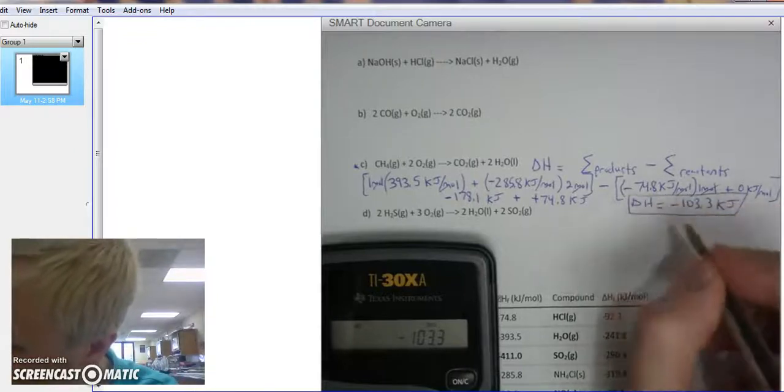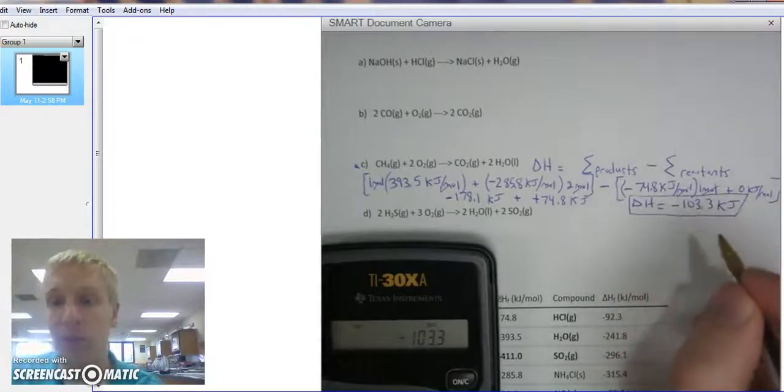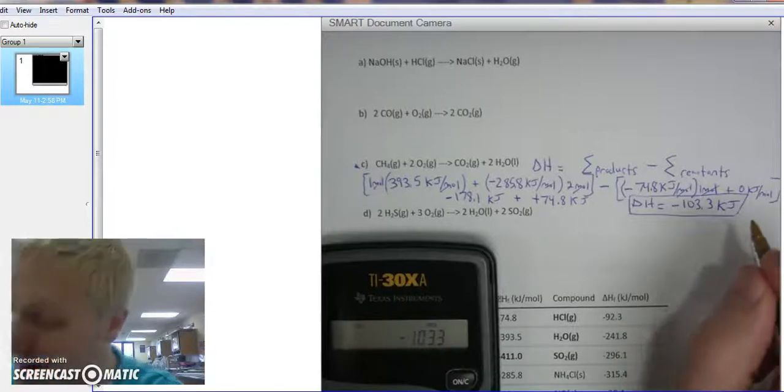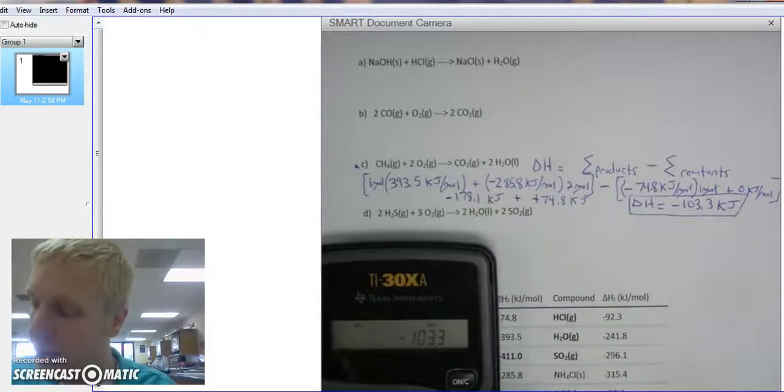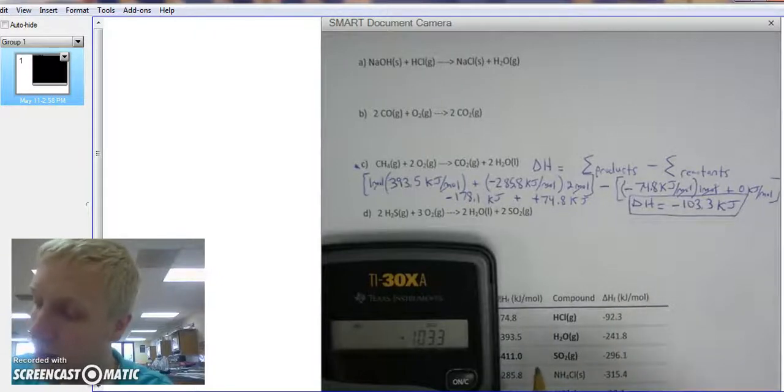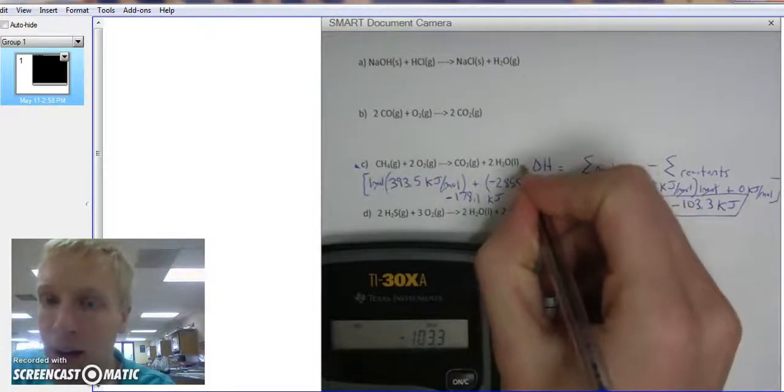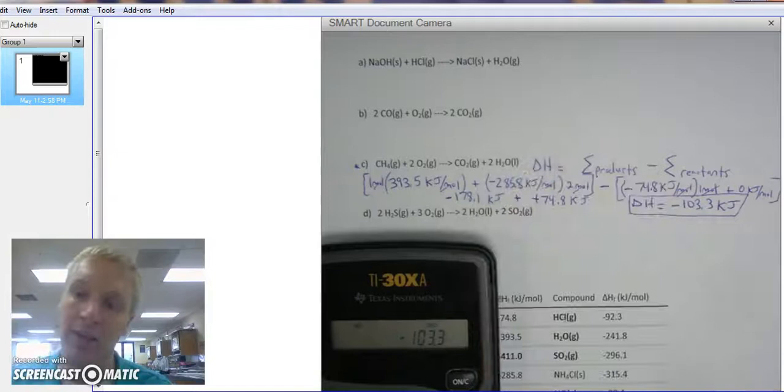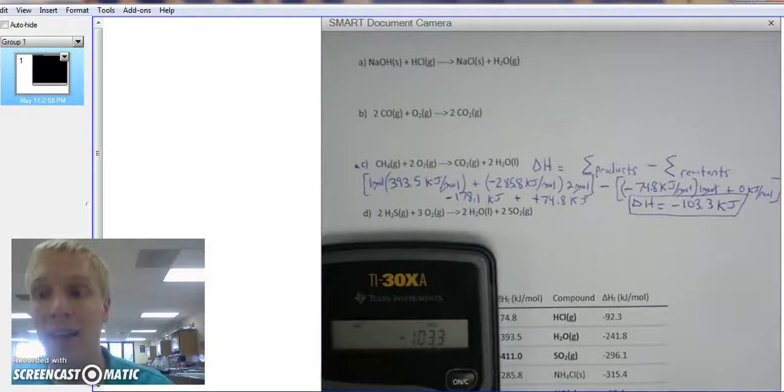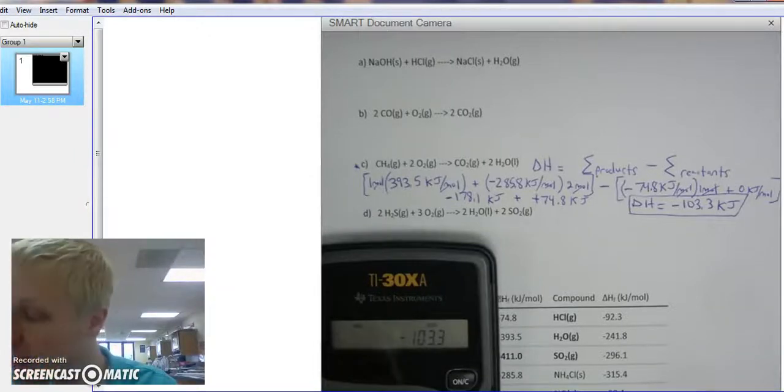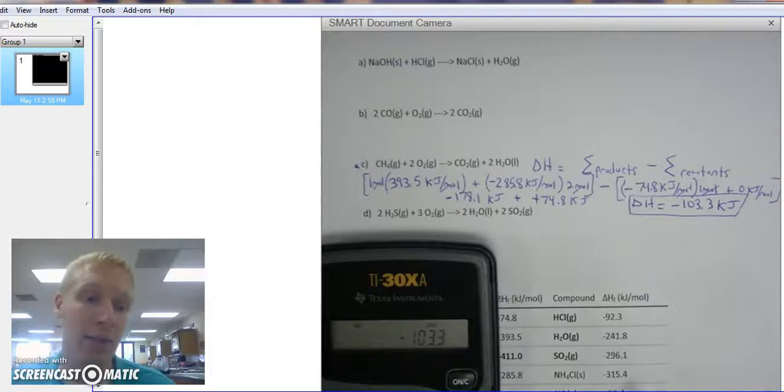And it's a negative delta H, therefore it's exothermic. Energy is being released. If I were to make this equation into a thermochemical equation, I would write 103.3 KJ on my product side to show that energy is being released. It's exothermic. My delta H is negative. And that is how we find the enthalpy of a reaction using the heat of formations.